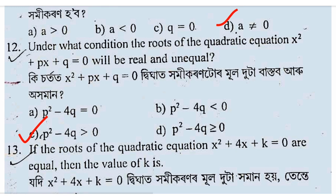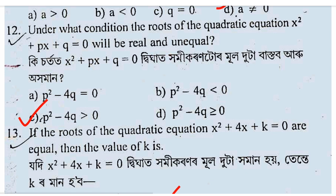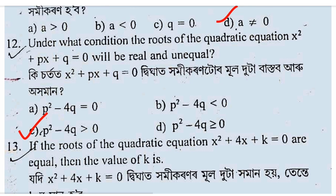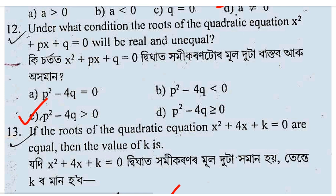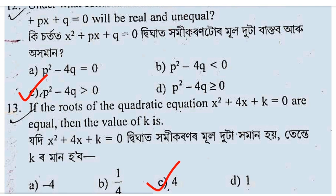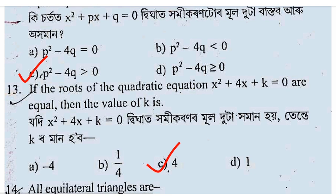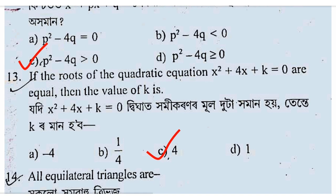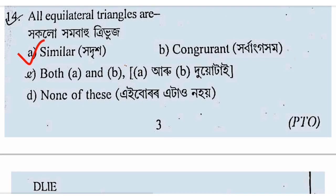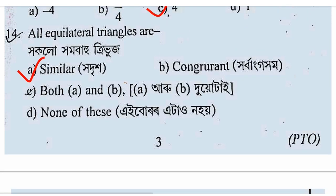P squared minus 4 times 1 into Q, C to Q is equal to 0. P squared minus 4C is equal to 0.